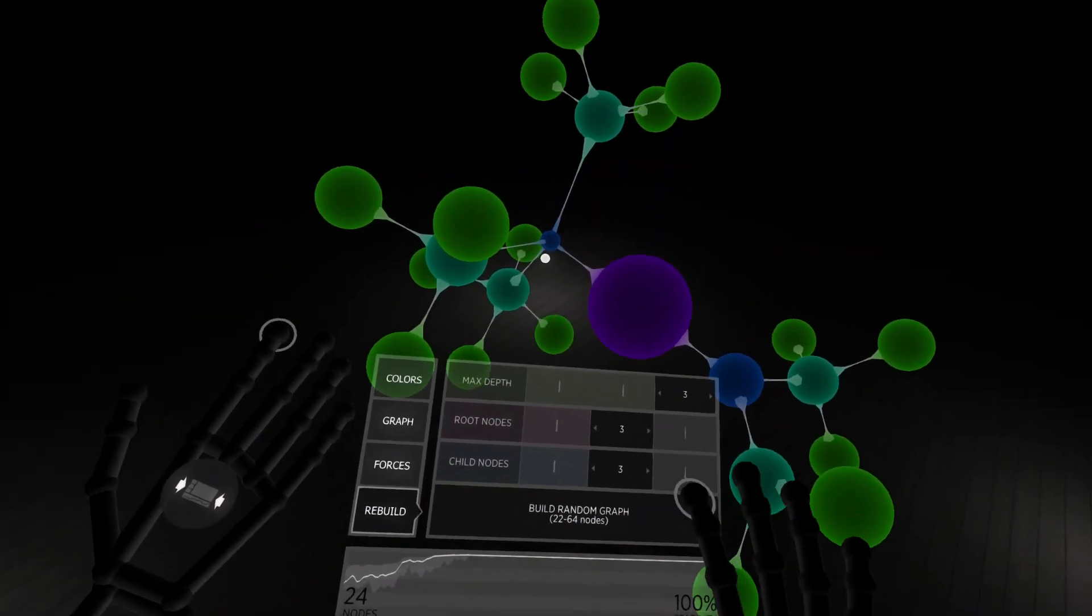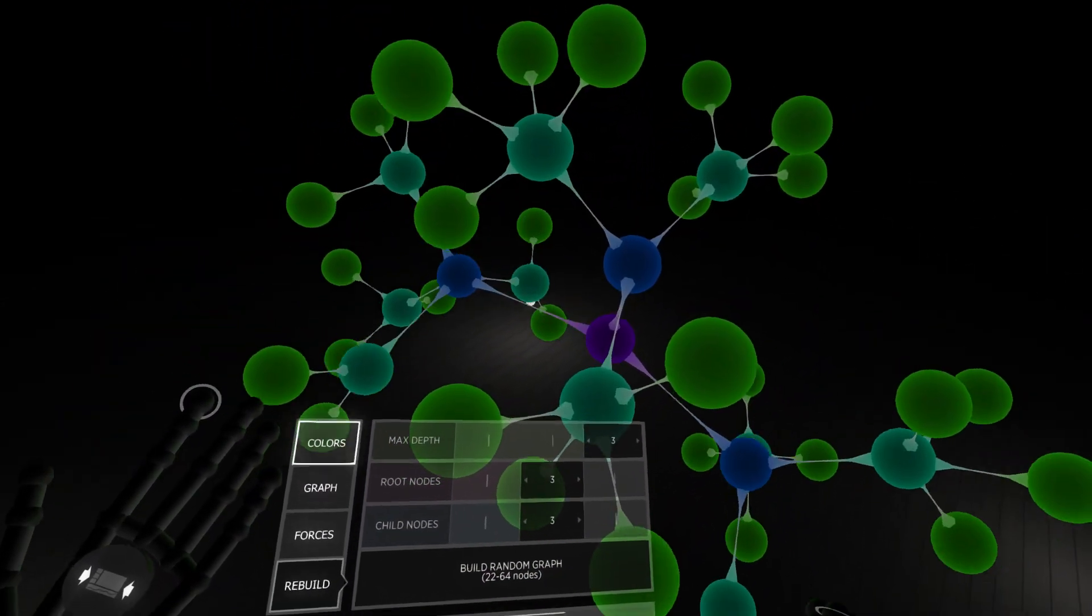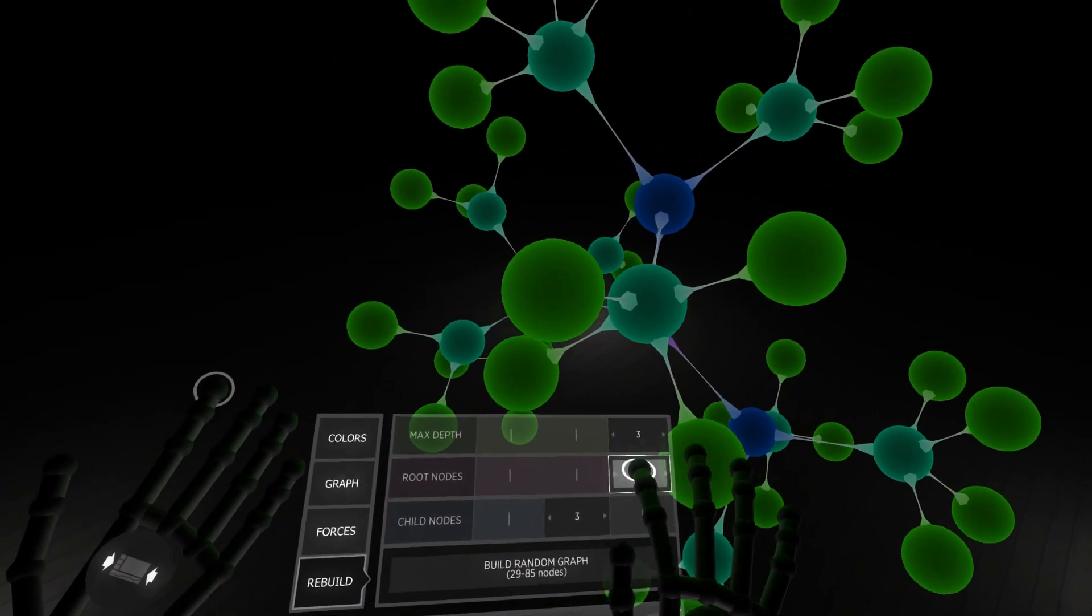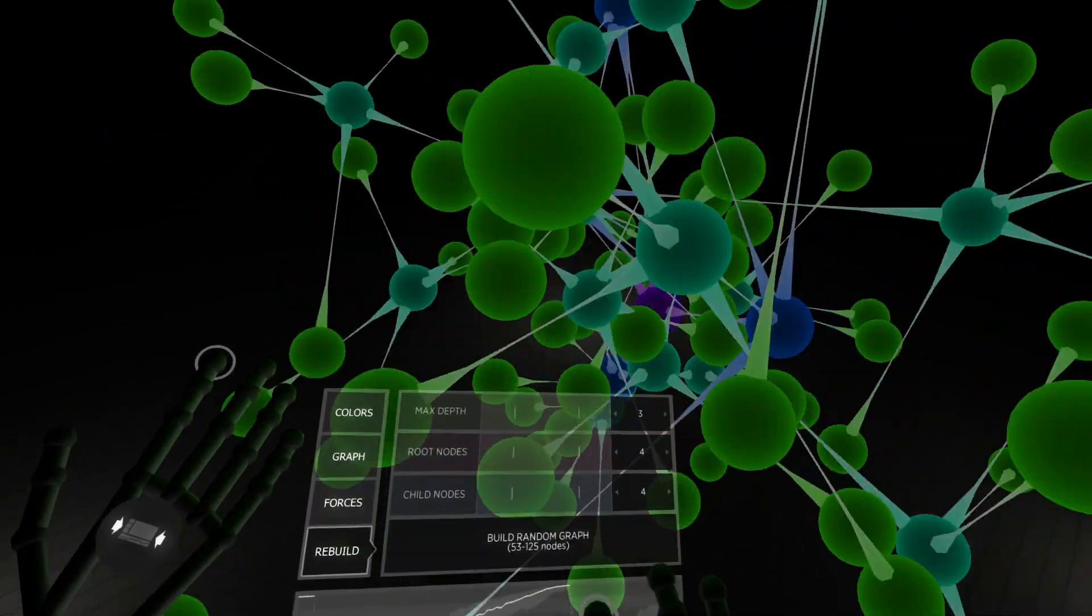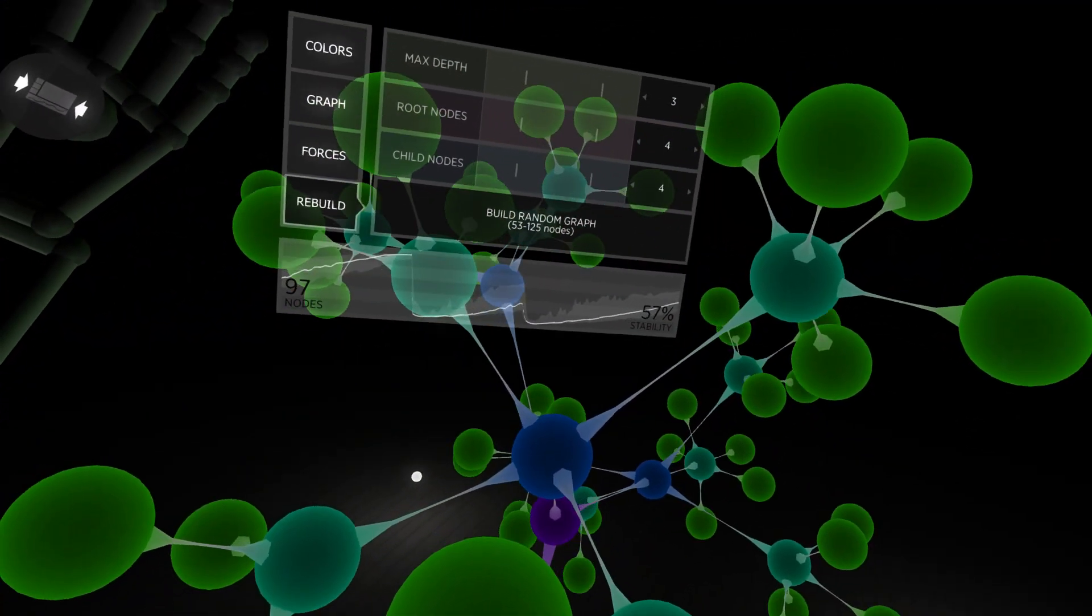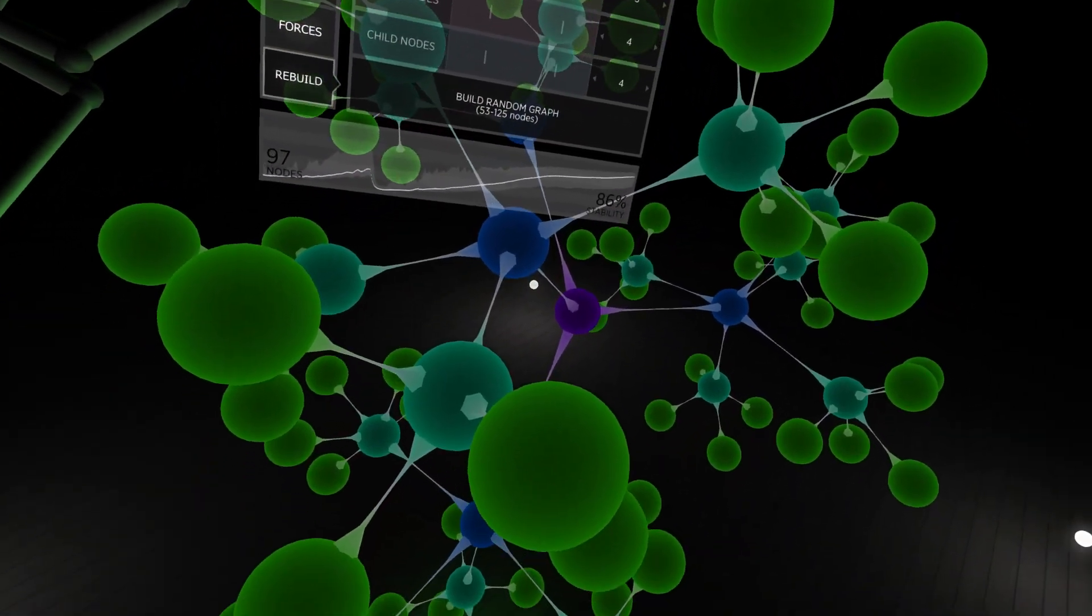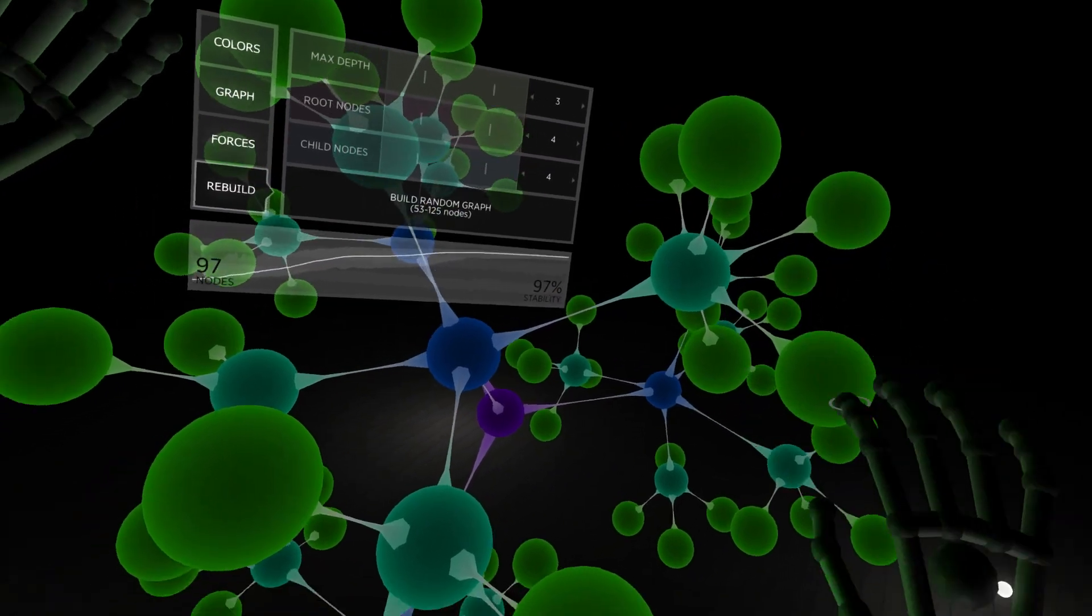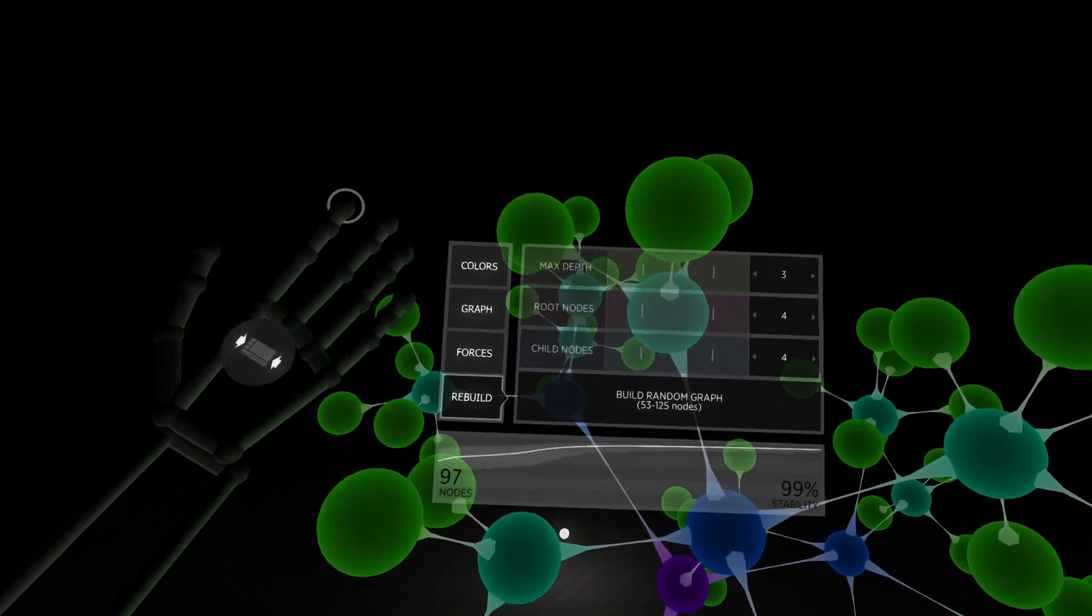We can also take a look at what happens when we rebuild the graph. Randomizes the positions and then it slowly gets itself back into balance. We can add more to it. Make a more complicated graph. See this one has 97 nodes and gradually it's working out its stability. Stability just means that its forces are all trying to get into balance, and all the nodes are trying to push and pull so that they are where they belong in the force directed graph.